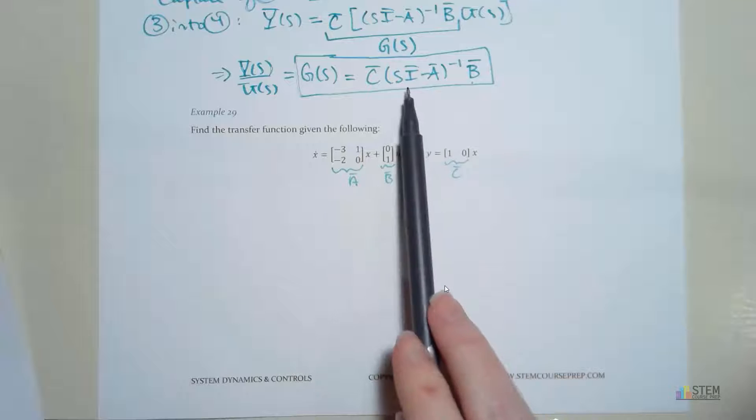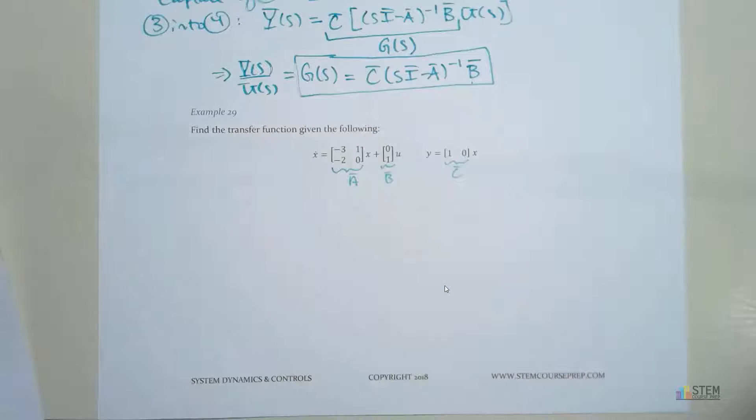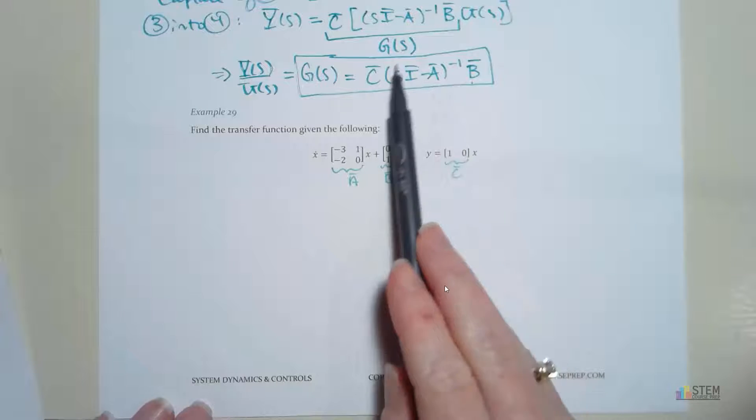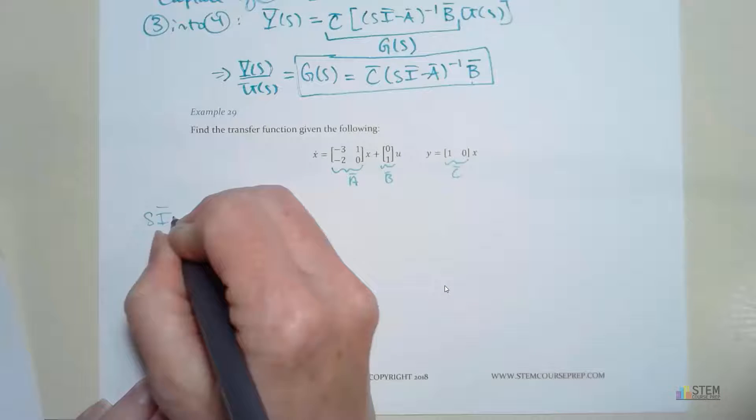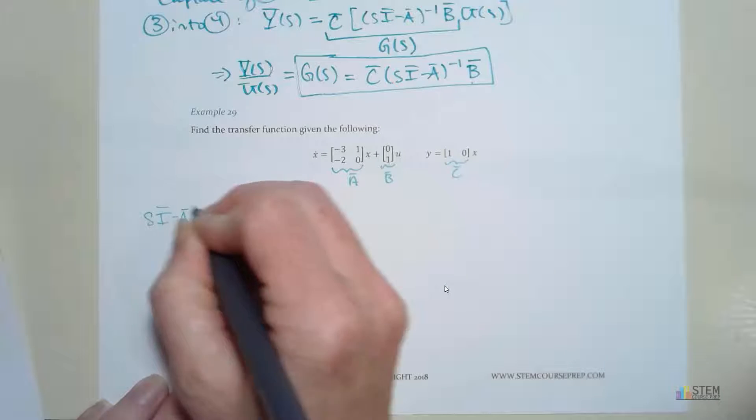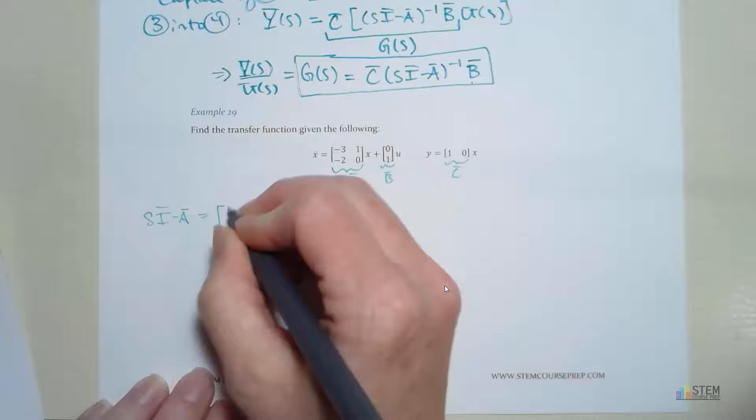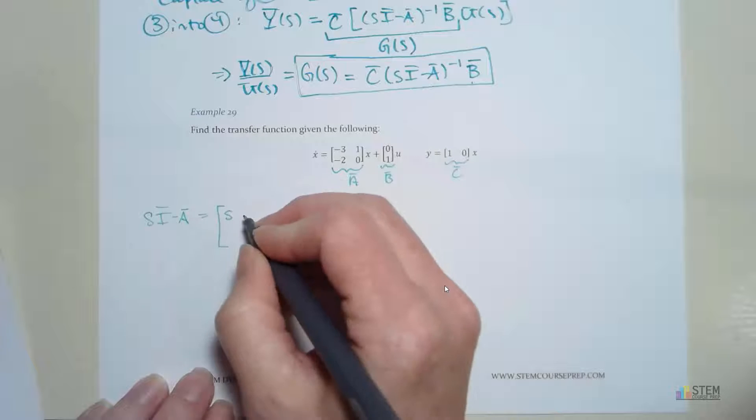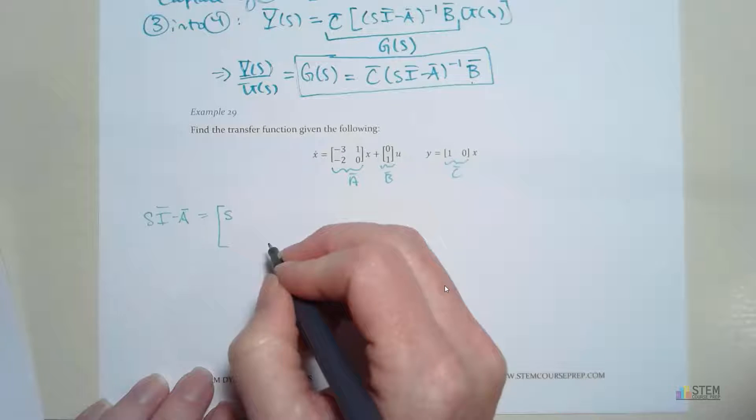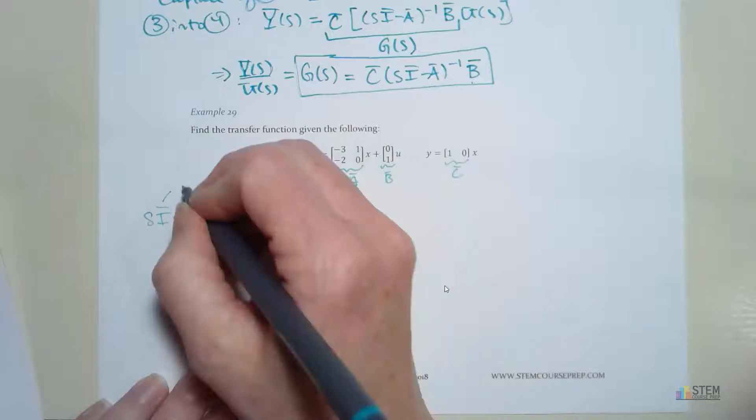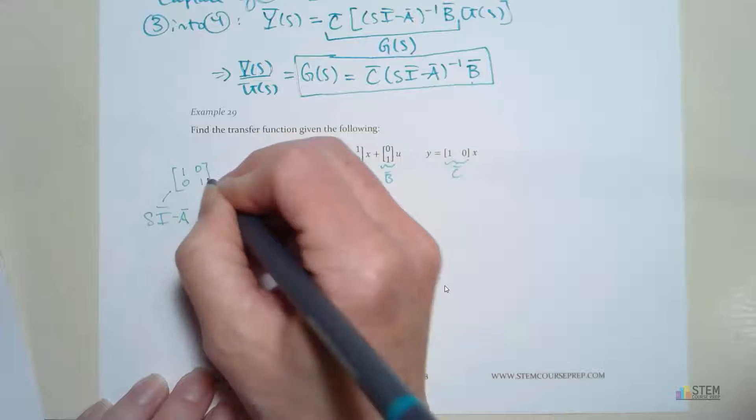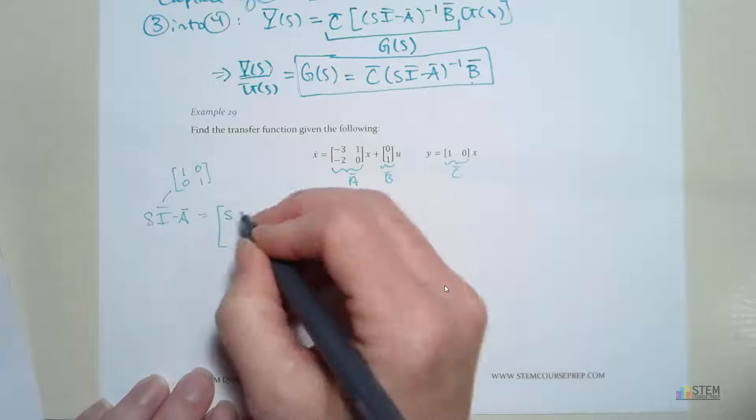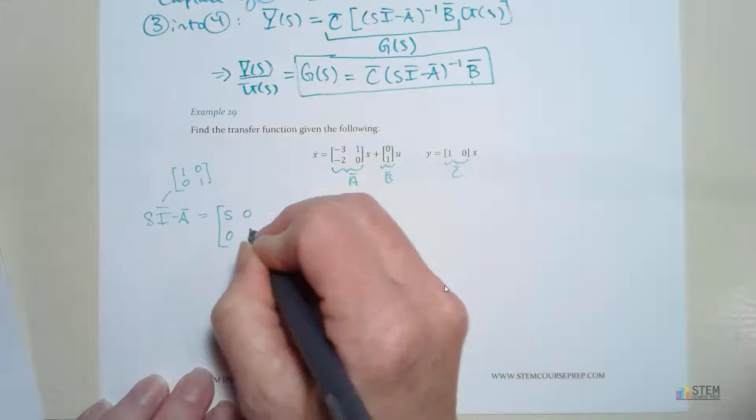Now, what we have to do is basically just plug it into here. Let's start on this term right here, the sI minus A. So s times I is going to be s times the identity matrix, which here we just have a 2 by 2 for A, so we only need a 2 by 2. So we're going to have [1, 0; 0, 1]. When you multiply by s, you get [s, 0; 0, s].